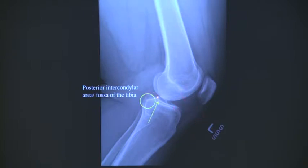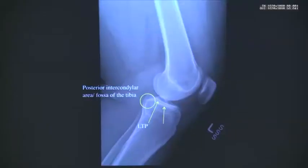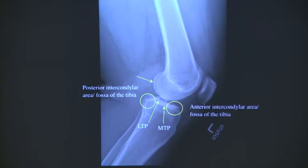I'm pointing to this white line. Two parallel white lines here - which one? Lateral tibial plateau, and that one is the medial tibial plateau. That's the anterior intercondylar fossa, and this is the area of the ACL attachment - not the spine, it's anterior to the spine. This condyle - medial or lateral? How can you tell? It's bigger. It looks bigger and usually projects inferior to the lateral condyle. That's the lateral femoral condyle.